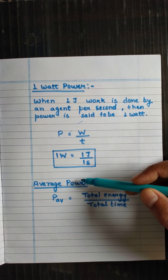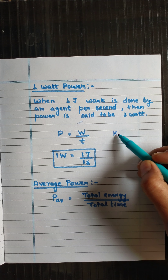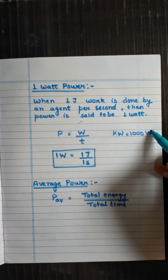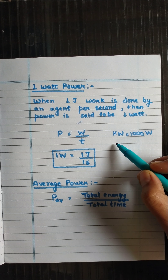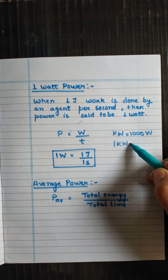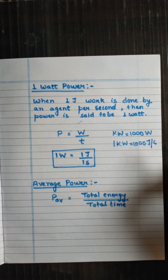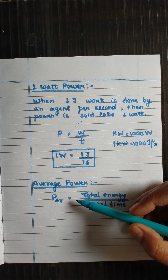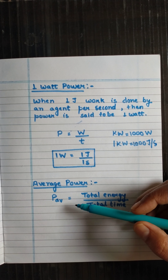The larger unit we can use is the kilowatt. One kilowatt means 1000 watts. One kilowatt is also equal to 1000 joules per second.